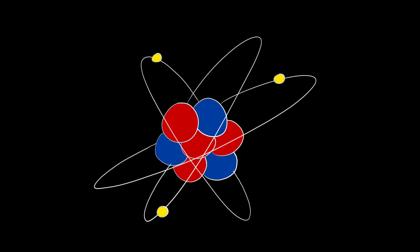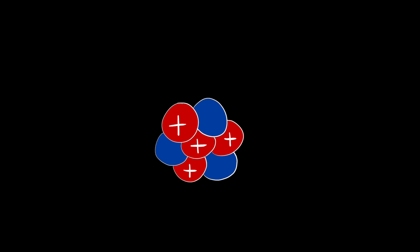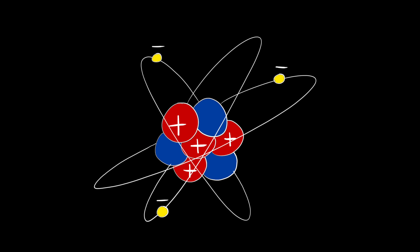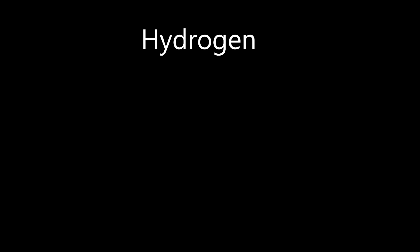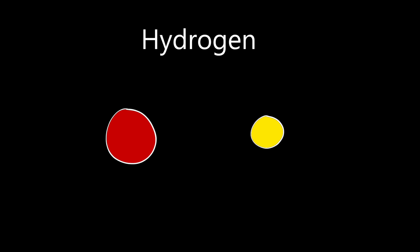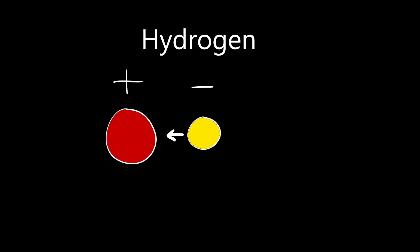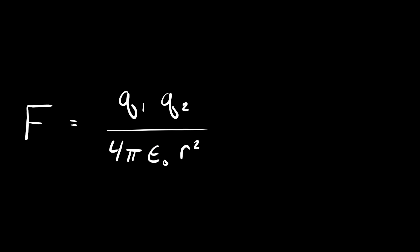All matter we can see in the universe is made of atoms. Atoms are made of positively charged protons, neutral neutrons, and negatively charged electrons. The protons and neutrons make up most of the mass of the atom and reside in the center, called the nucleus. The electrons have a relatively small mass and exist far away in regions around the nucleus called orbitals. Let's consider hydrogen, the simplest atom, with only one proton and one electron. Because the charge of the electron is opposite that of the proton, the electron is attracted to the proton in the nucleus.